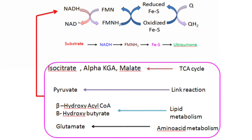NADH is the donor of electrons. It is formed during oxidation reactions involving dehydrogenases — enzymes that remove a pair of hydrogen atoms from the substrate. Each hydrogen atom contains one electron, so removal of two hydrogen atoms equals removal of two electrons. Dehydrogenases of the TCA cycle — isocitrate dehydrogenase, alpha-ketoglutarate dehydrogenase, malate dehydrogenase — along with pyruvate dehydrogenase of the link reaction, enzymes of beta-oxidation and ketolysis, and glutamate dehydrogenase of amino acid metabolism all generate NADH, which is the electron donor in Complex I.